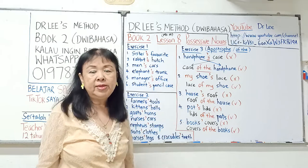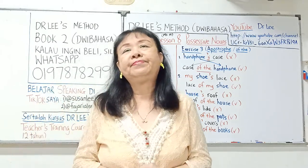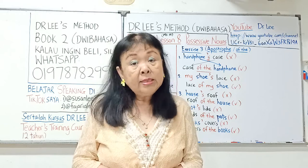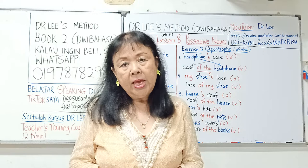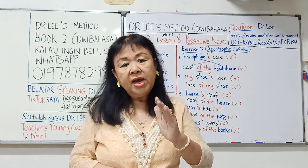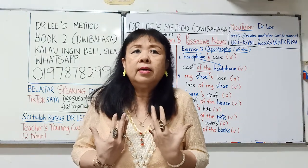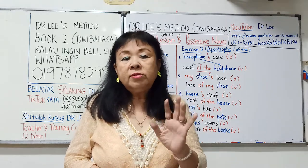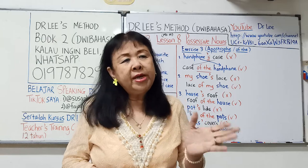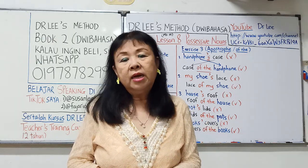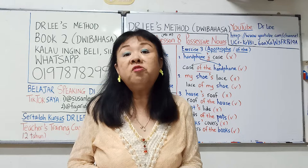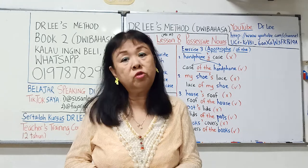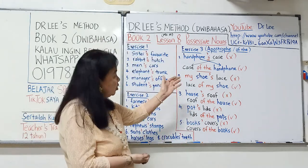Exercise 3 — untuk benda. Kita tidak boleh tulis apostrophe atau apostrophe S untuk sesuatu yang tidak bernyawa. Contohnya meja, kerusi tidak ada nyawa. Maka kita gunakan 'of the' untuk menggantikan apostrophe ataupun apostrophe S.